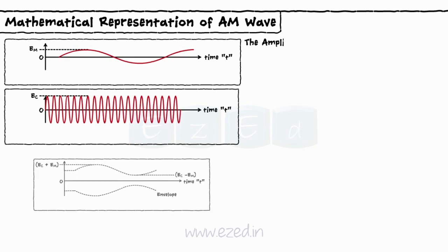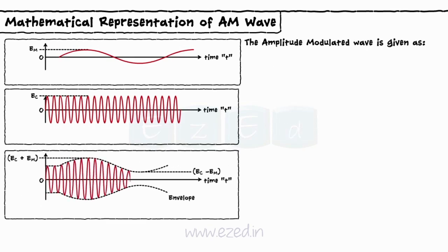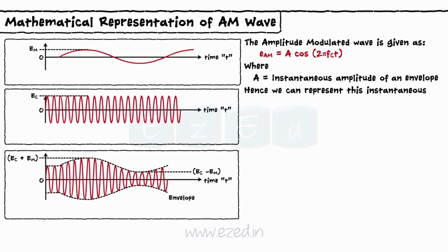The amplitude modulated wave is given as EAM equals A into cos 2 pi fc t, where A equals instantaneous amplitude of an envelope. Hence, we can represent this instantaneous value as A equals EC plus EM. We substitute the value of EM in this equation to get the expression for A.